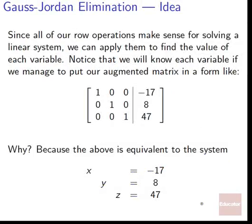Gauss-Jordan elimination. Since all our row operations make sense for solving a linear system, we can apply them to find the value of each variable. If we manage to get our augmented matrix into a form with 1, 0, 0 in the first row, 0, 1, 0 in the second, and 0, 0, 1 in the third, we'd immediately know what each variable equals.